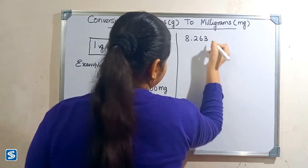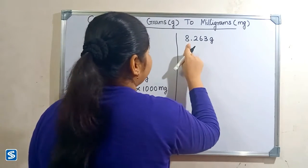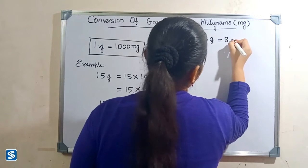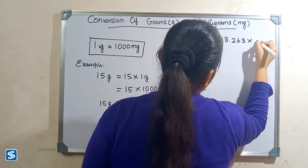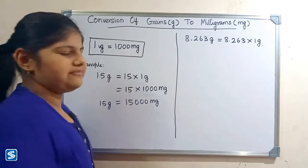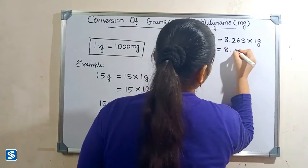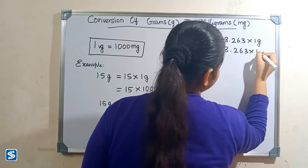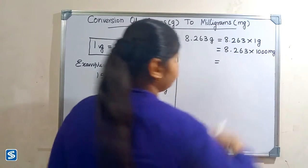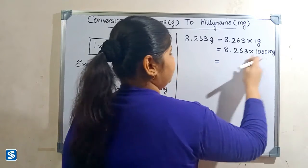8.263 grams. 8.263 grams can be written as 8.263 x 1 gram. Now we have to substitute 1000 milligrams in the place of 1 gram, so 8.263 x 1000 milligrams. The easy way to multiply a decimal number with 1000 is